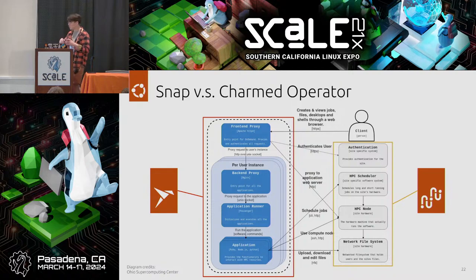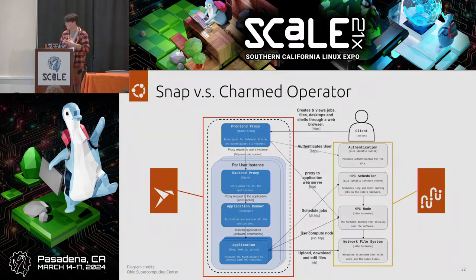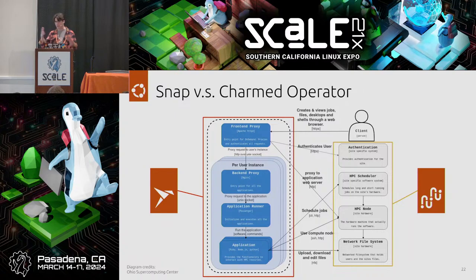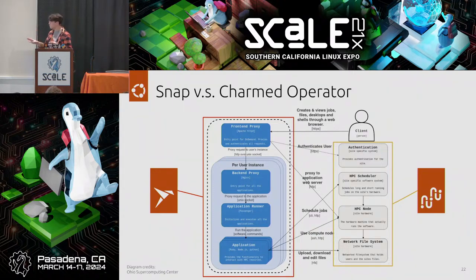Where is our work coming in? On stage right — those are the components going inside the Snap. The front-end proxy, back-end proxy, application runner, and parts of the application. The Apache front-end service is working quite nicely — if you install the snap, you can start navigating to some pages. We're working on the per-user aspect: the back-end proxy and application runner. We do have NGINX and Passenger building successfully into the snap. The parts highlighted for Juju on stage left — scheduler, authentication, node hardware, and storage implementation — are already available.